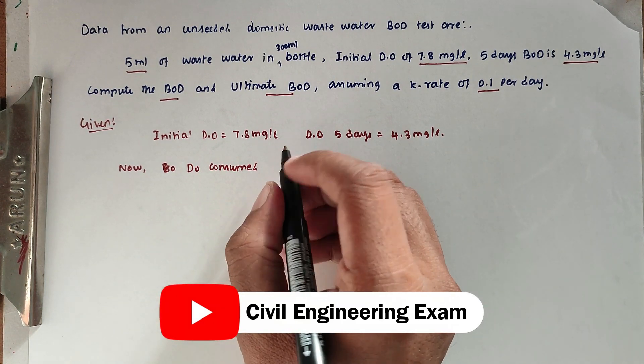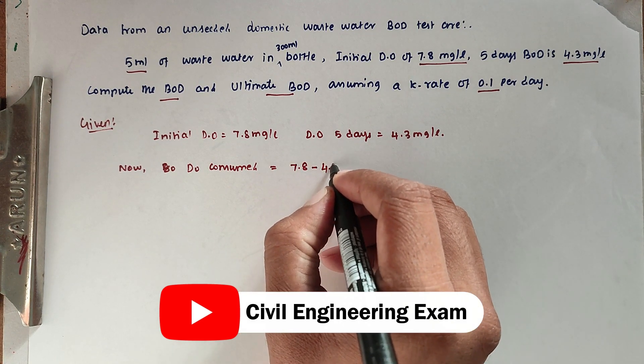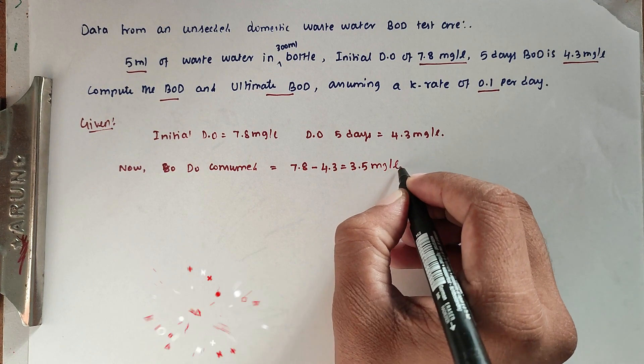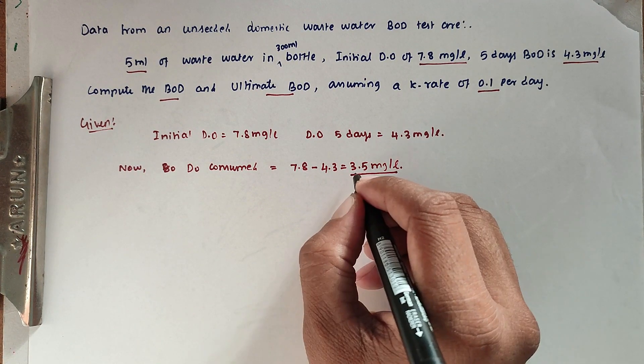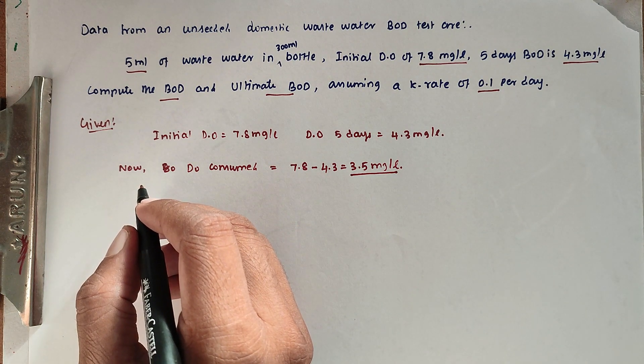Now we can find out dissolved oxygen consumed. DO consumed for 5 days is 7.8 minus 4.3, which is 3.5 mg/L.